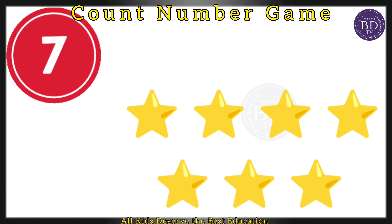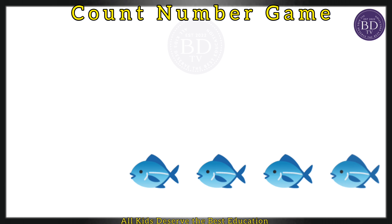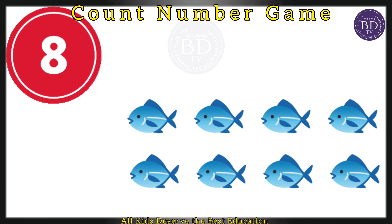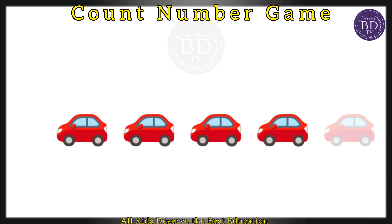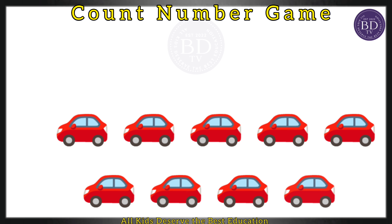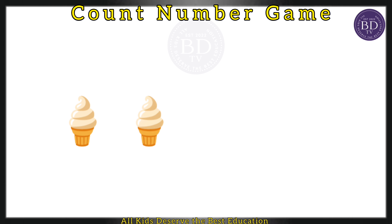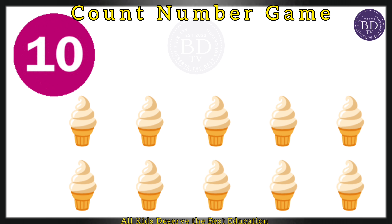1 2 3 4 5 6 7 — 7 stars. 1 2 3 4 5 6 7 8 — 8 fishes. 1 2 3 4 5 6 7 8 9 — 9 cars. 1 2 3 4 5 6 7 8 9 10.